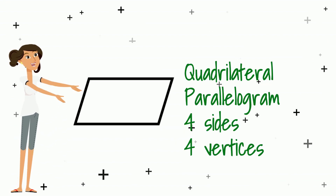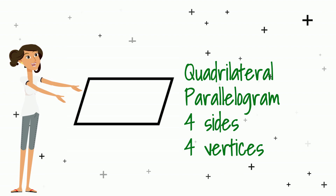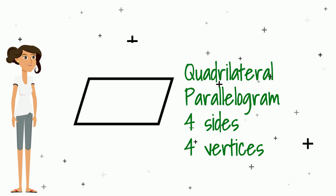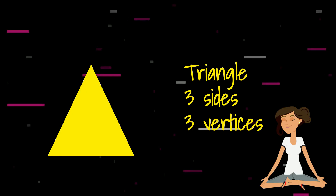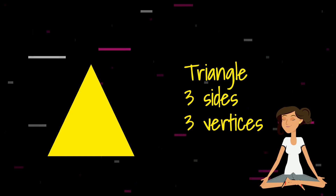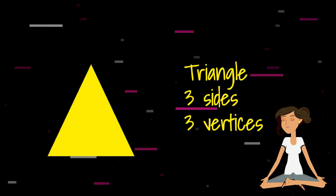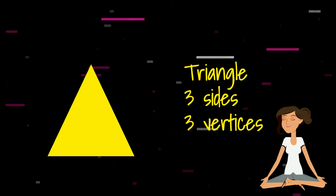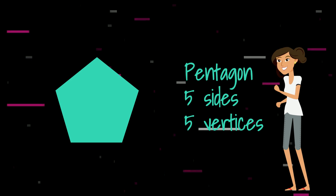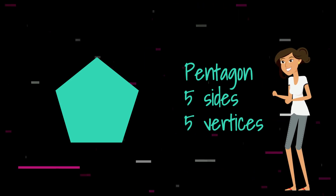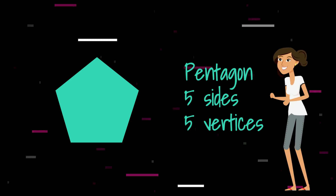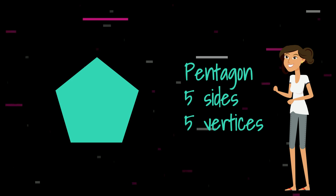Here is another quadrilateral — it has four sides and its name is a parallelogram, with four sides and four vertices. This is a triangle — three sides and three vertices. This is a pentagon — it has five sides and five vertices.